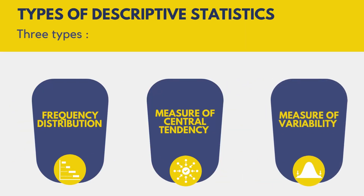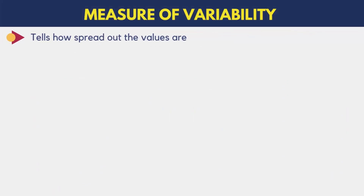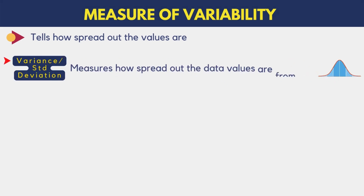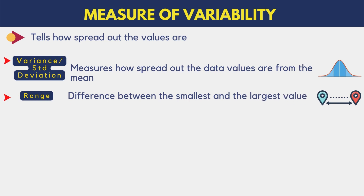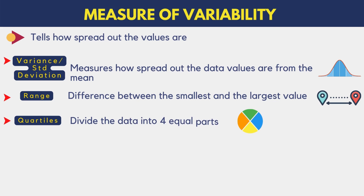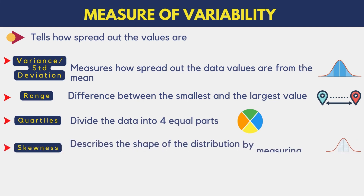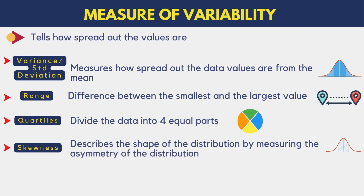The third type is the measure of variability or dispersion. It tells how spread out the values are — that is, how far apart the data values are from the center. They are further divided into various types. First, variance and standard deviation, which measures how spread out the data values are from the mean. Second, range, which is the difference between the smallest and the largest value in the data set. Third, quartiles, which are the points in the data set that divide the data into four equal parts. Fourth, skewness, which describes the shape of the distribution by measuring the asymmetry of the distribution.